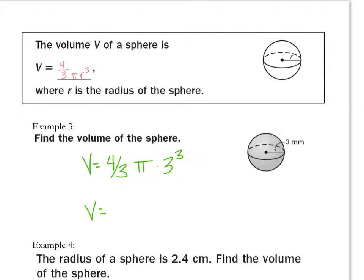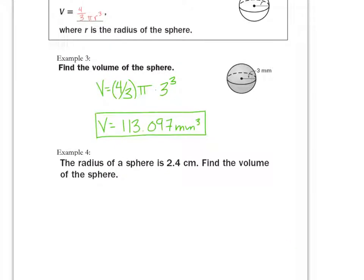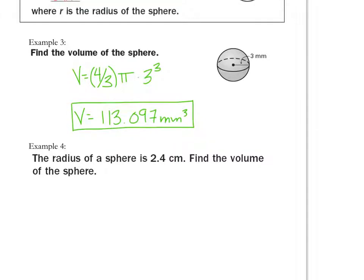Otherwise, you don't know if maybe it's just a calculator error. Or maybe you're doing the formula wrong. 113.097 millimeters cubed. So, I do 4 divided by 3. And I put that in parentheses. And then you just do 3 to the power of 3. So, see if you can do this one. Punch it in. See what you get.